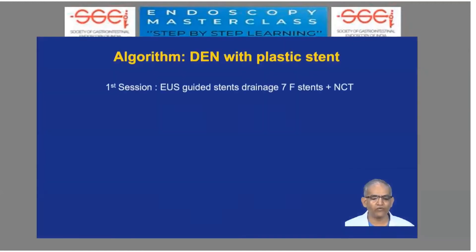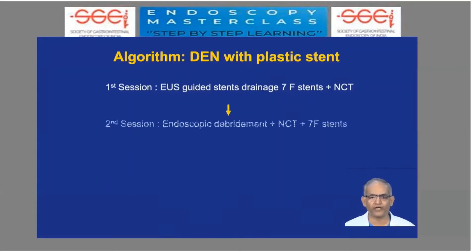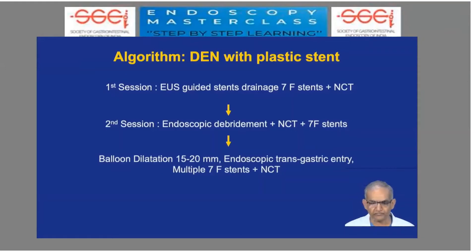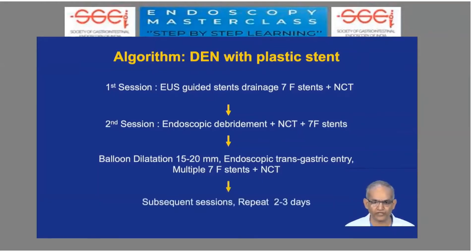In patients with plastic stents, the first session is always drainage only with plastic stent and nasocystic tube if required. The second session, done 2 to 3 days after, involves debridement after dilation. A third session can again be done with gaps of 2 to 3 days. Each session requires replacing the plastic stent or nasocystic tube, because irrigation is an important part of the treatment of endoscopic necrosectomy.